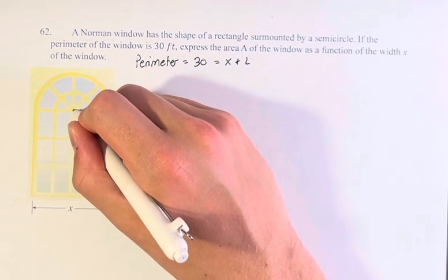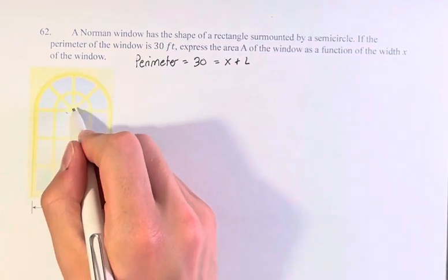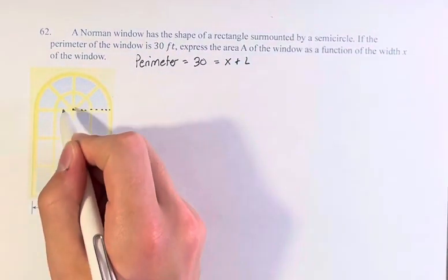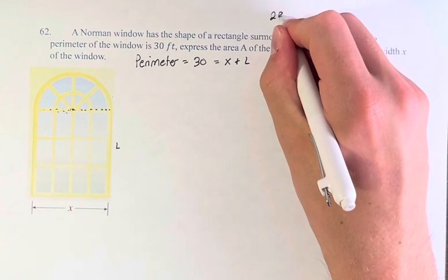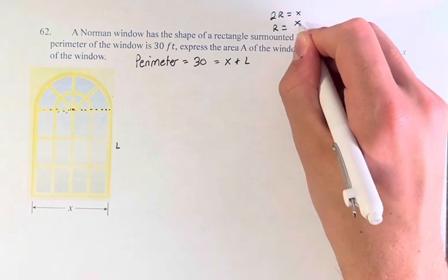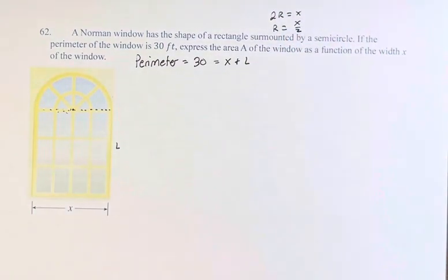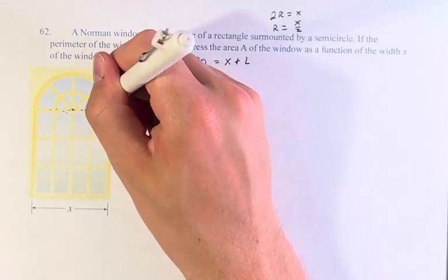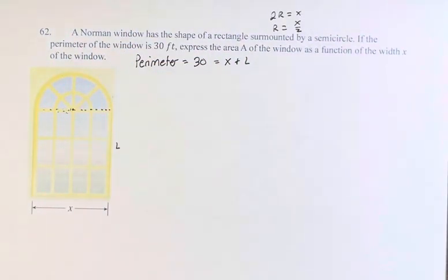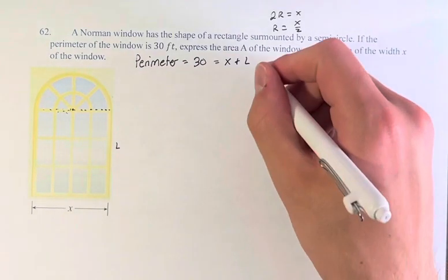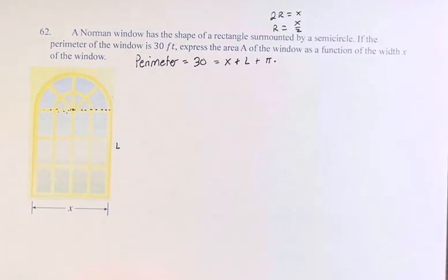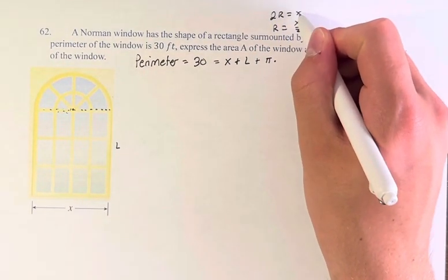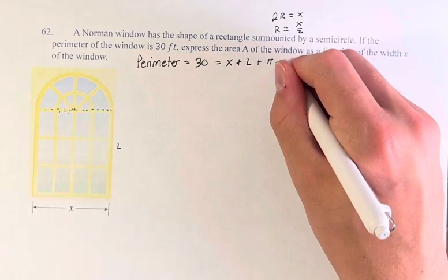We have a circle here with the center here. And this is the radius. There's also a radius in this direction. So 2 times the radius is equal to x. Therefore, the radius is equal to x over 2. So the circumference of this circle, the perimeter of it, is equal to pi times the diameter, which is equal to twice the radius, which is equal to x. So pi times x.